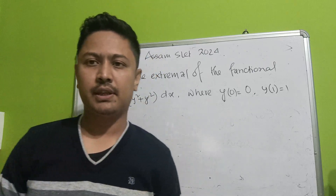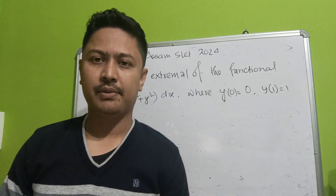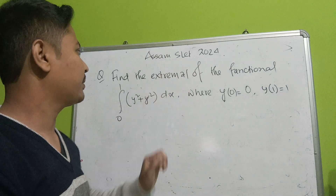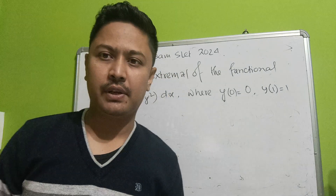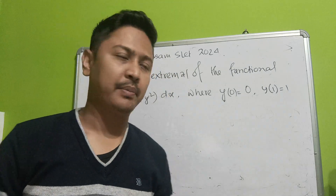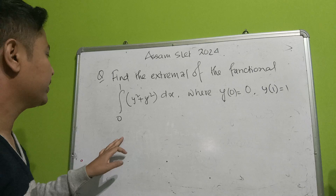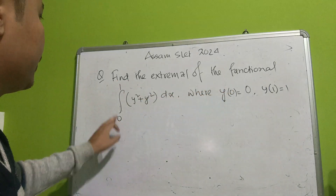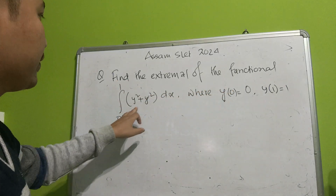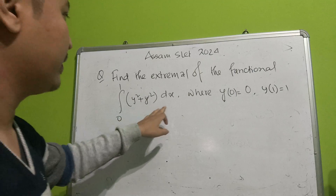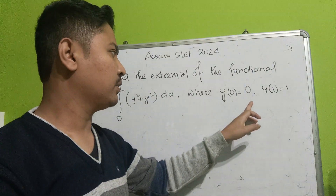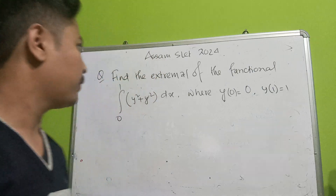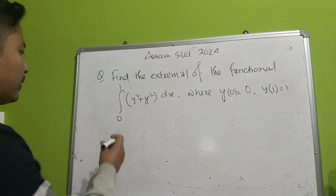Hello everyone, welcome once again to my YouTube channel. This is an Assam Slate 2024 problem, calculus of variations — an extremal problem. The question is: find the extremal of the functional, the integral from 0 to 1 of (y squared plus y prime squared) dx, where y(0) equals 0 and y(1) equals 1.